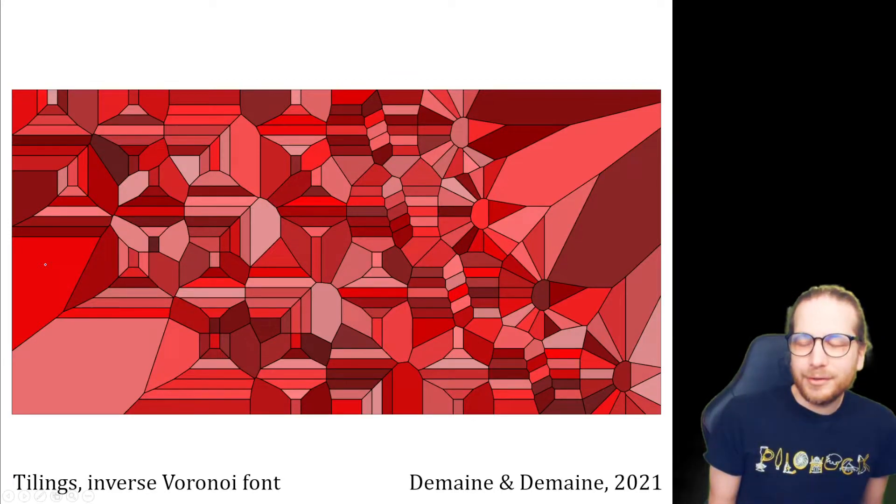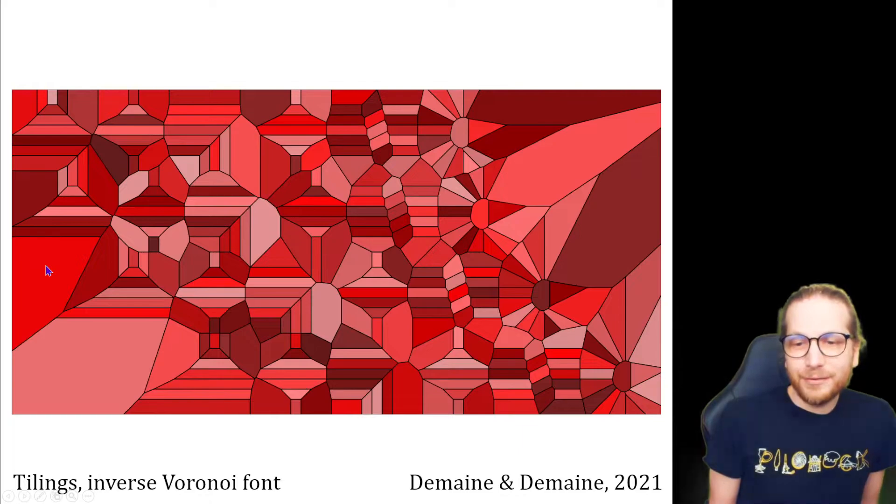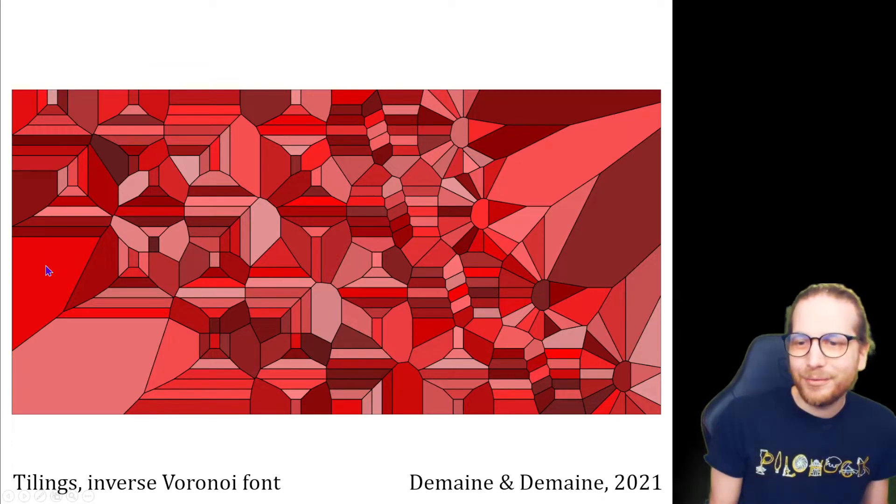Here's a nice example in the red hue. This is of the words, tiling, tiling, tiling, tiling, with some spacing, and you just get some really cool patterns. This is one of our favorites.